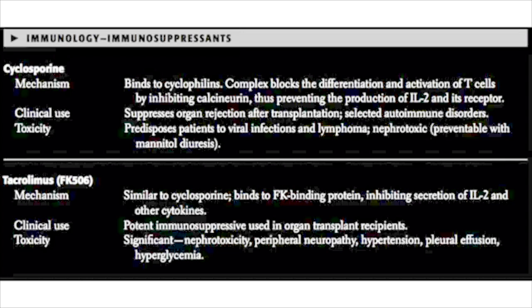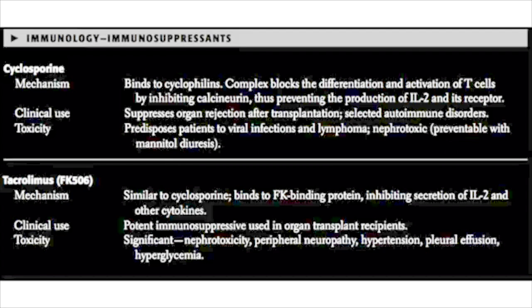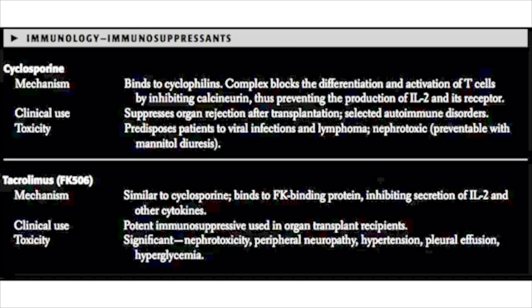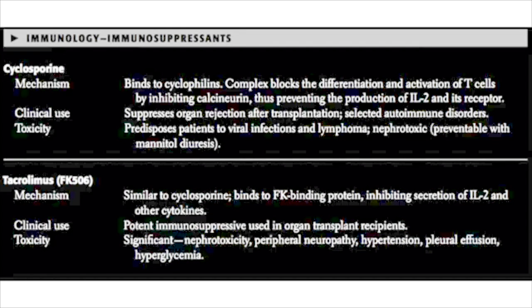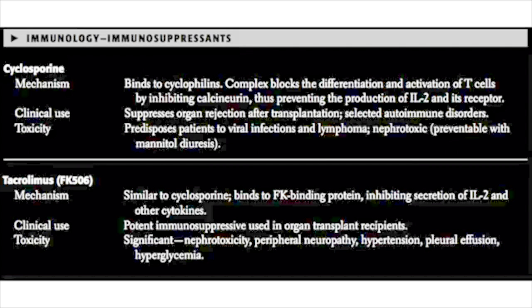If cyclosporine is present, you have inhibition of calcineurin, and thus inhibition of NFAT, and thus inhibition of IL-2 production. This is used to suppress organ rejection and also for long-term maintenance of immunosuppression in patients with either an organ transplant or a severe autoimmune condition.